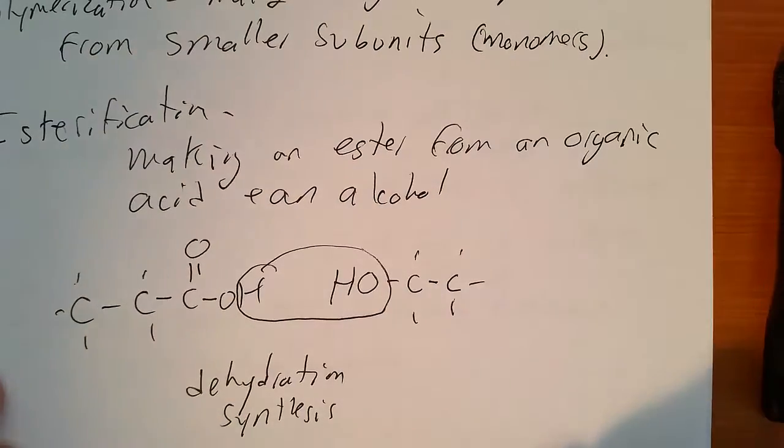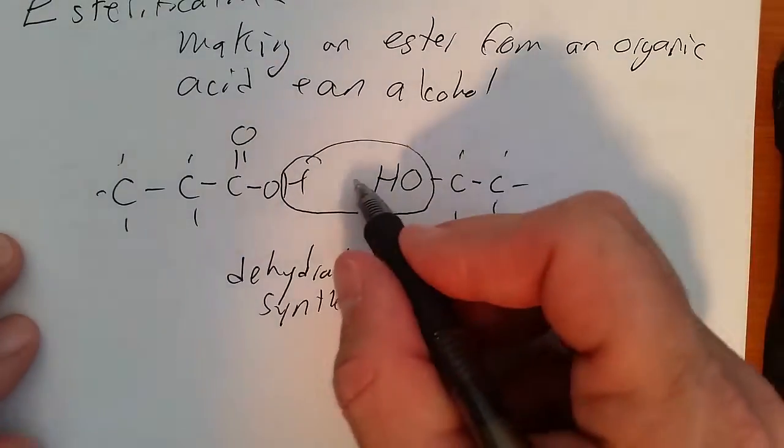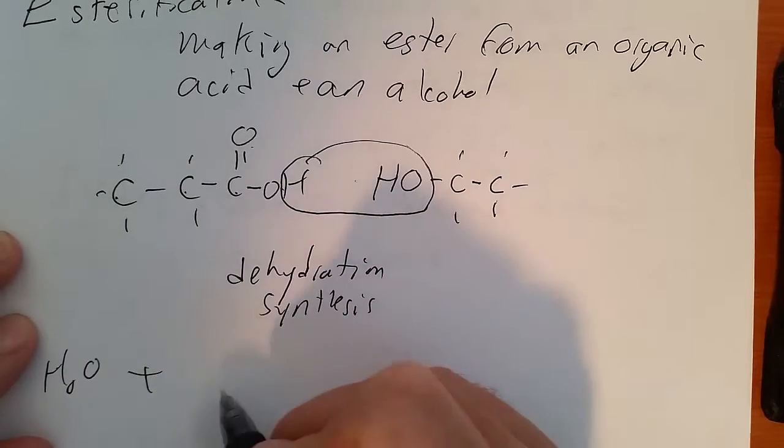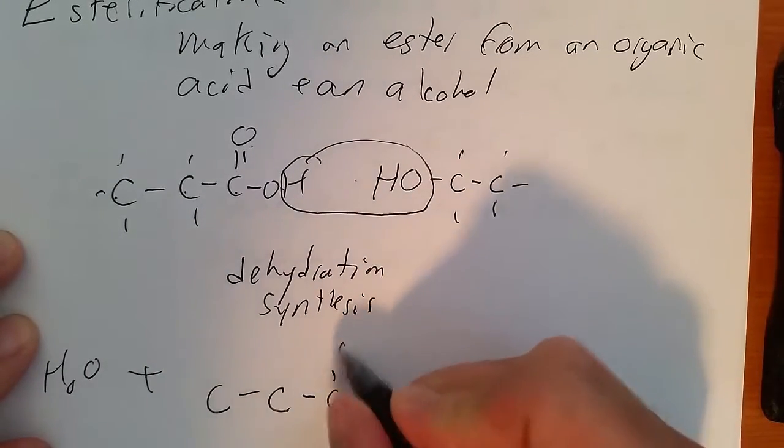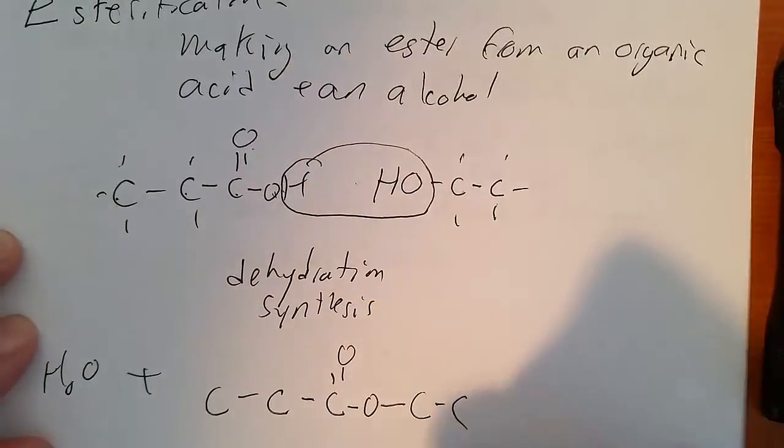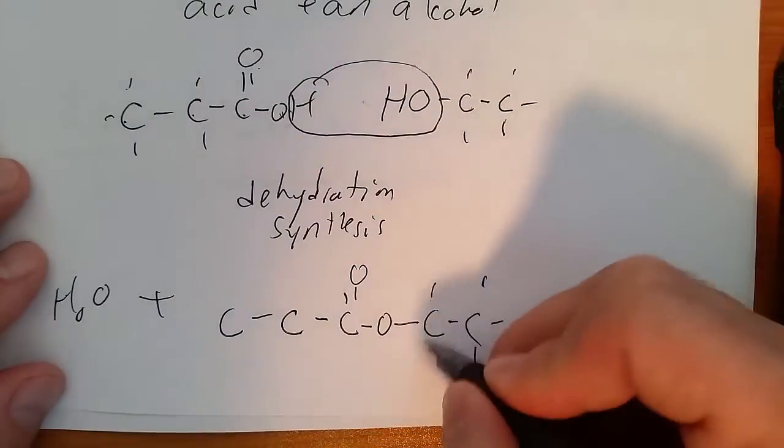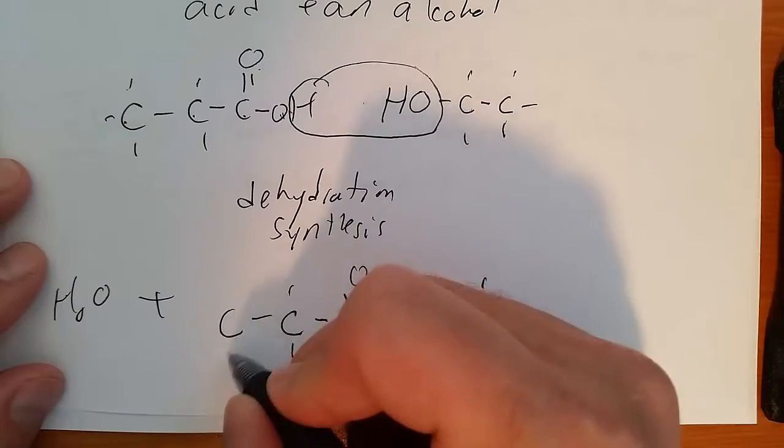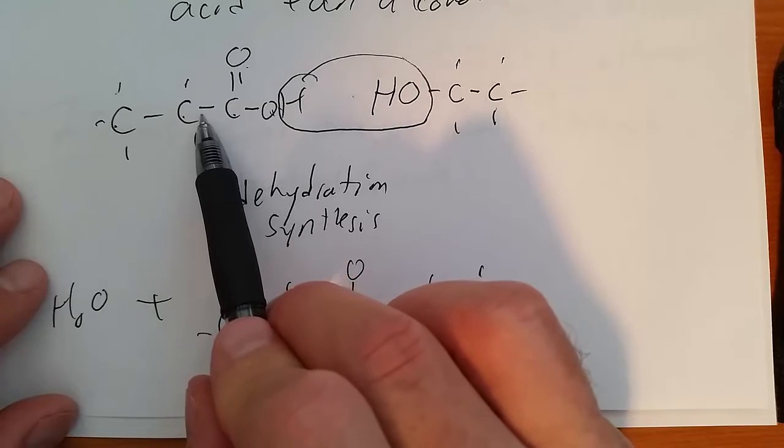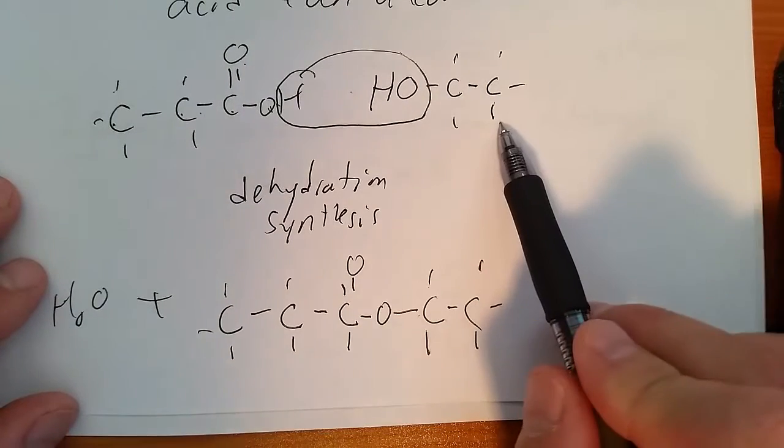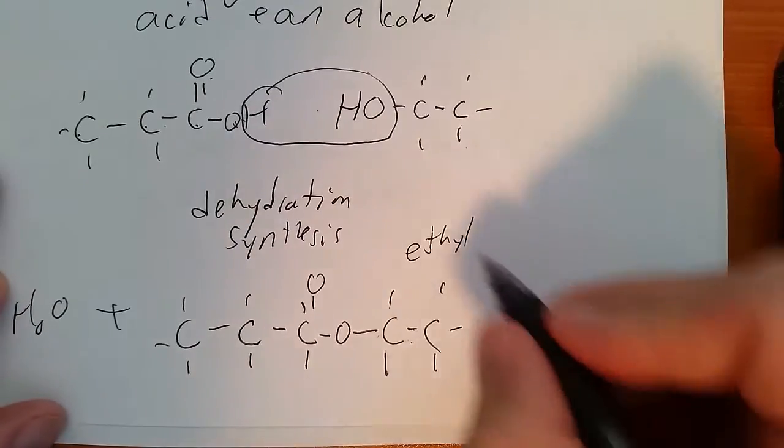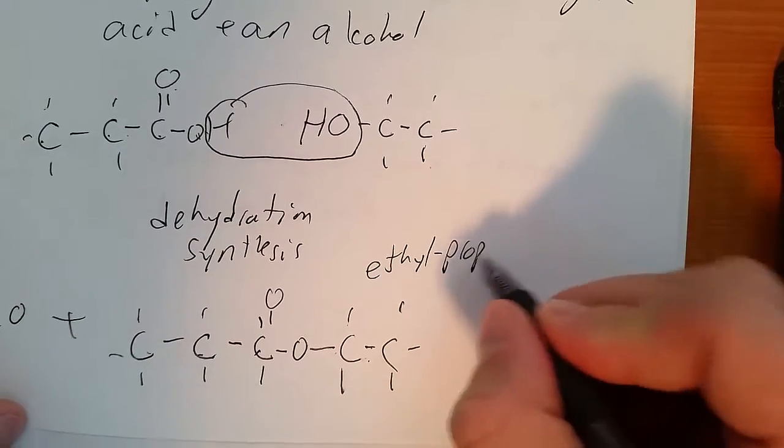So we end up with this water. And I'm going to draw C-C-C-C-O-O-C-C-C-O-O. And then this oxygen is going to bond to this carbon for my two carbons. And I went from propanoic acid and ethanol to ethyl one, two, three, propanoic acid.